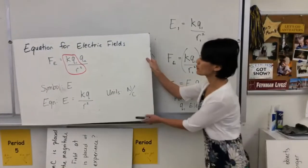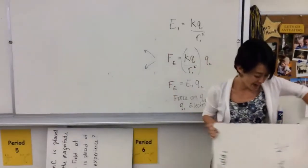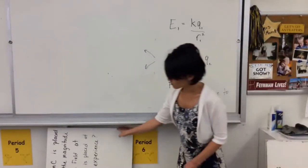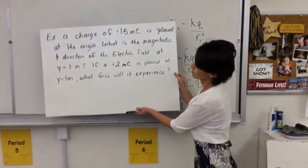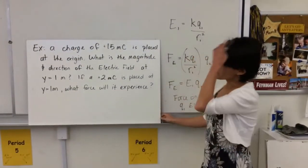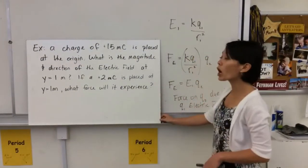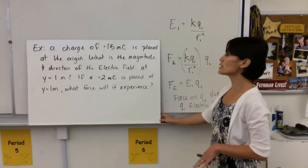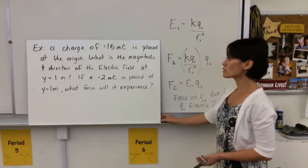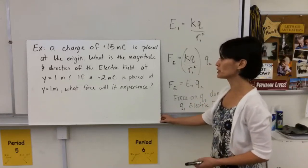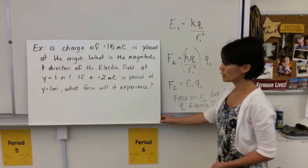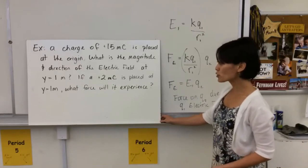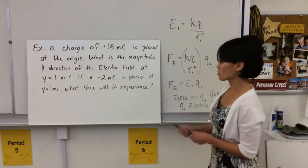So let's look at just one example of this, kind of in that light. So this says a charge of positive 15 millicoulombs is placed at the origin. What is the magnitude and direction of the electric field at y equals 1 meter? And then if a positive 2 millicoulombs charge...